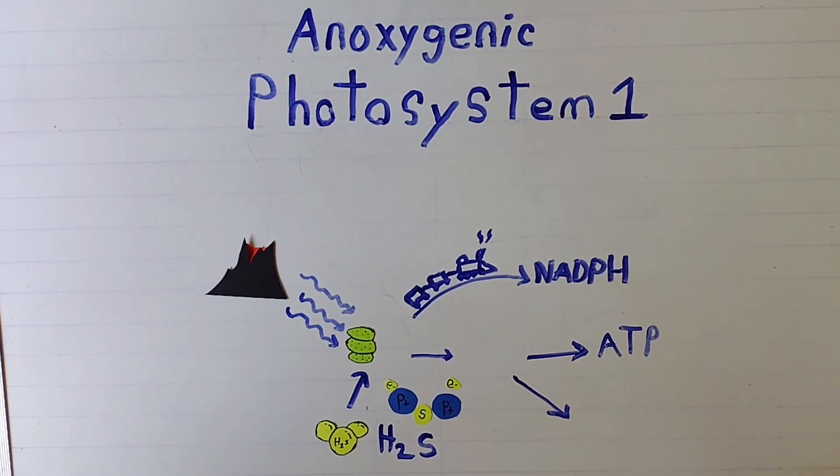In anoxygenic photosynthesis, the water is swapped out for hydrogen sulfide because of the weaker light from the hydrothermal vents, meaning that it's not strong enough to break down water but is strong enough to break down hydrogen sulfide.